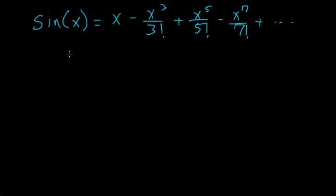Remember, a factorial — for instance, 4 factorial — is just 4 × 3 × 2 × 1.